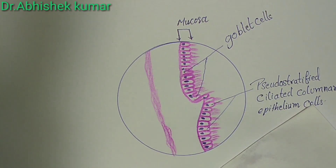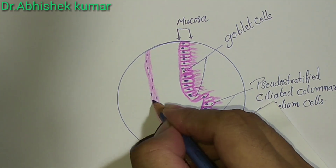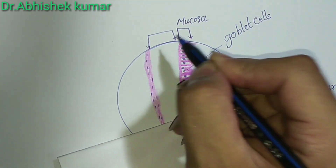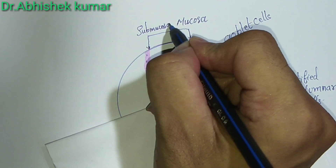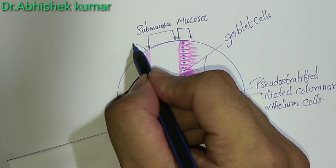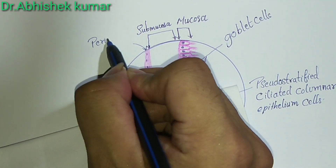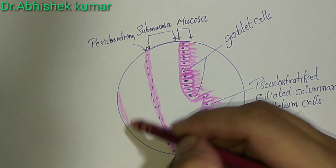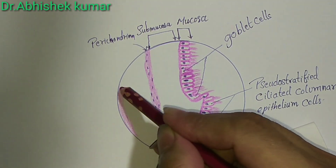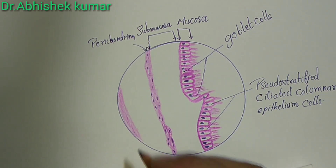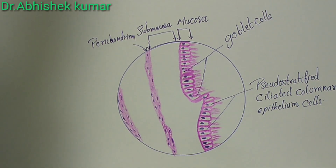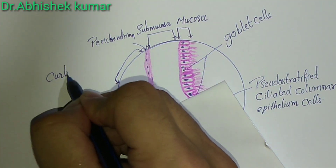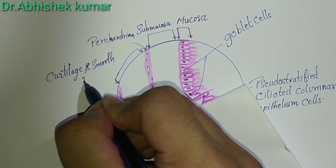This one is perichondrium, and this part is called submucosa. The second layer is the submucosa layer, and this one is perichondrium. Adjacent to the hyaline cartilage, it is surrounded by connective tissue called perichondrium. The third layer is called the cartilage and smooth muscle layer.